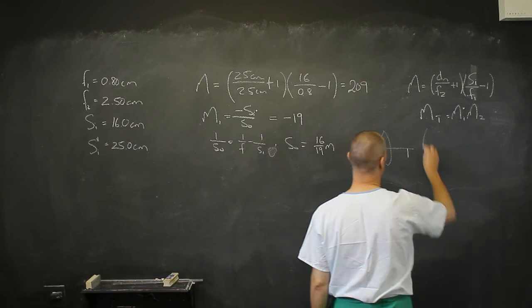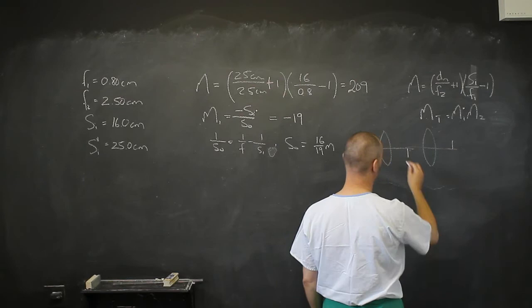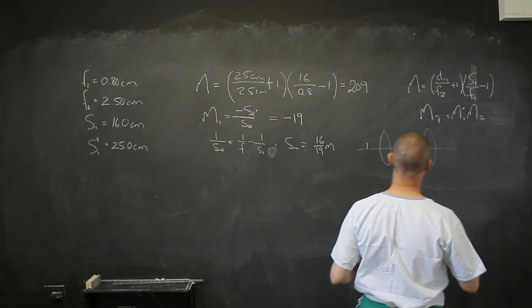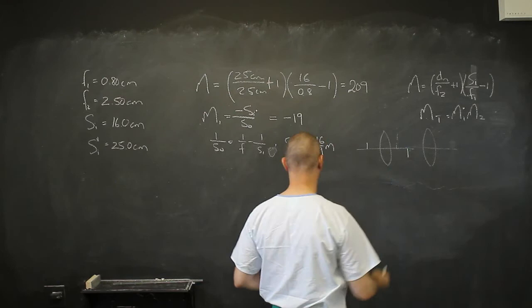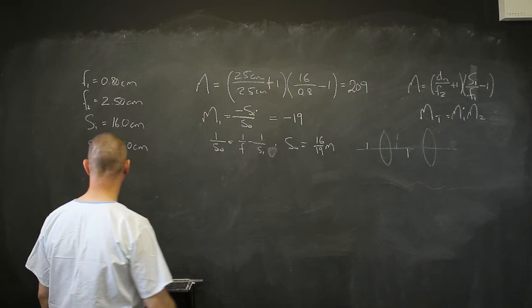Obviously, what we want, what we're going to have in this instance is we want 25 centimeters away from there. We want this virtual upright image. So let's just look at that. Now what we were not told is this length L between these two lenses.